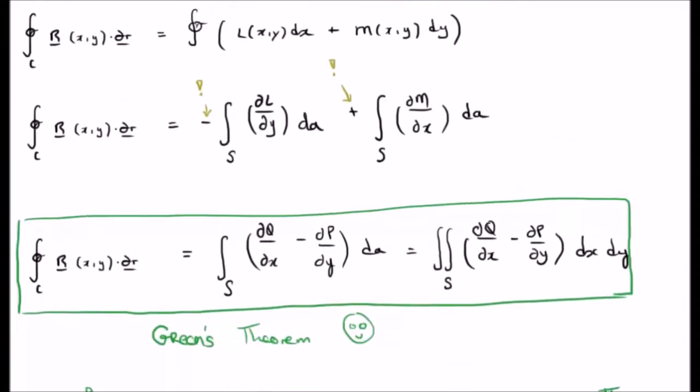And we see that if we take the closed line integral of an arbitrary vector field in two dimensions, x and y, dot dr, it's equivalent to the surface integral of del q del x minus del p del y or del l del x—excuse me, del l del y—and del m del x.